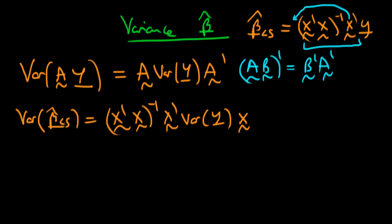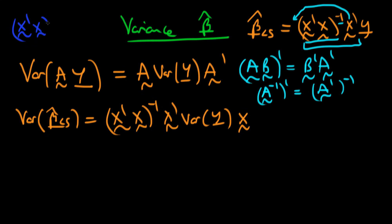Now I need to think about what happens when I apply the transpose operator to (X'X)⁻¹. It turns out that the transpose of any matrix A inverted is the same as A transposed then inverted — the order in which I apply the transpose and inverse operators doesn't matter. So I can just think about the transpose of the product X'X. The order inverts: I get X transposed out front, and the transpose of X transpose is just X. So I get (X'X)⁻¹ again — the same as what we started with.